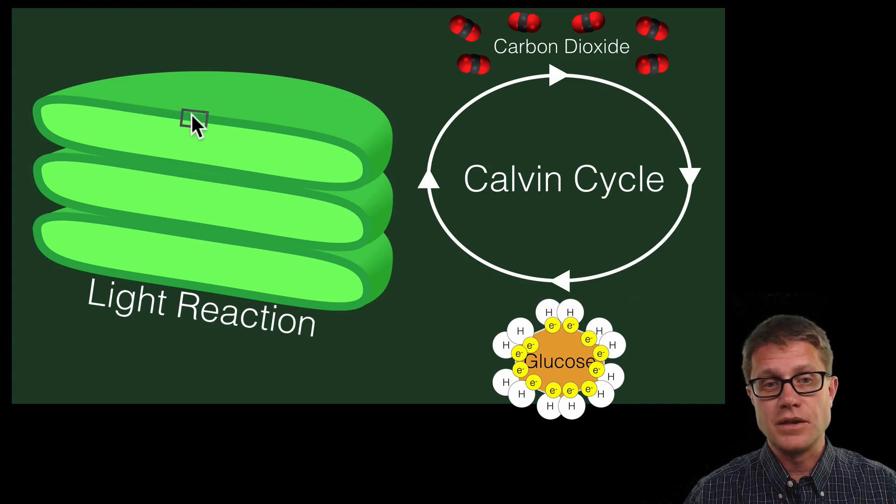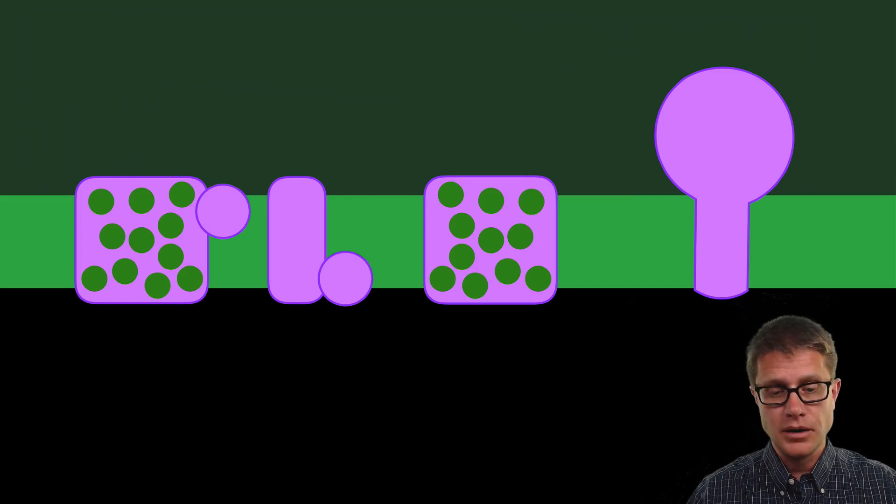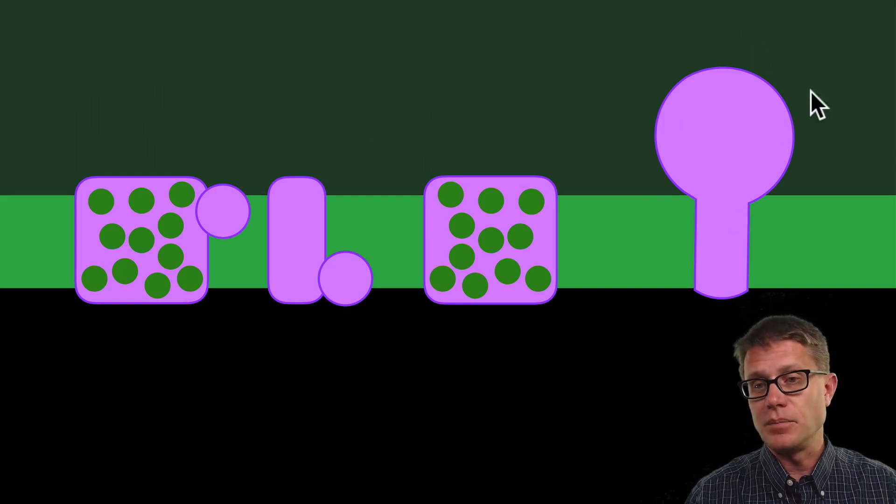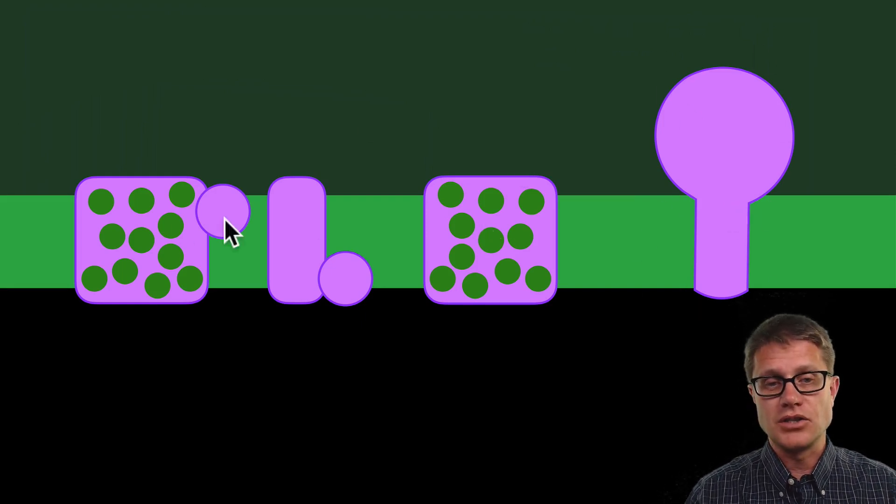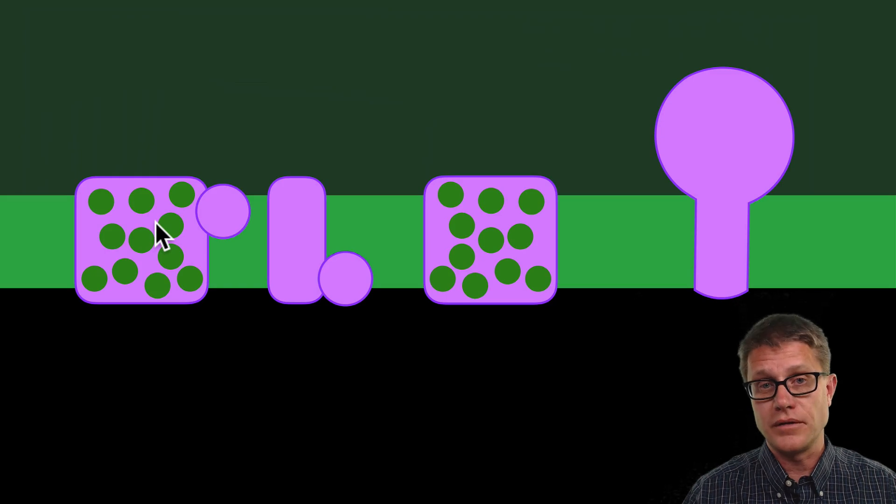So we are going to zoom in to this rectangle right here. And what we will find is there is a membrane but there is also a series of proteins. That is going to be everything in purple. One of the most famous ones is ATP synthase. But we also have these giant antenna complexes. Those are going to be proteins that are filled with pigments. One of the most famous ones obviously is chlorophyll.